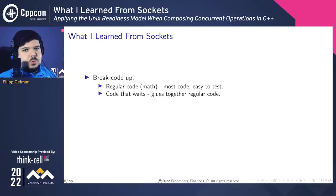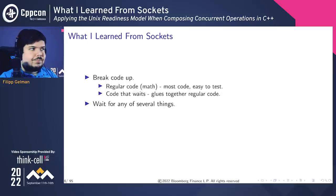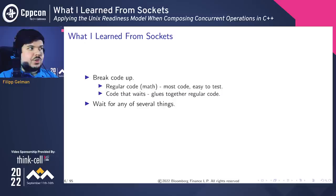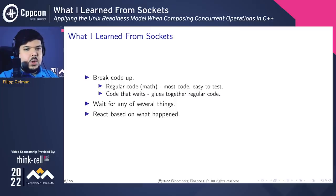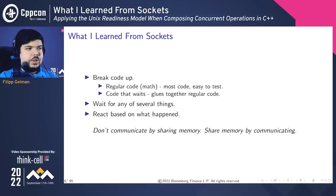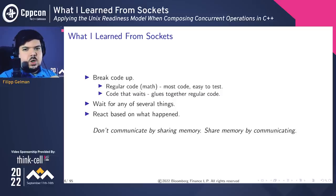Then we can just deal with the complicated parts here without worrying about the rest of the business logic. And when waiting, I find it helpful to wait for several things — really powerful and flexible algorithms can be built up this way. And finally, after we wait, we react based on what has happened. Here's a little quote: 'Don't communicate by sharing memory. Share memory by communicating.' What I get from this is, if we restrict communication between different domains using sockets, then that can make code a whole lot simpler.